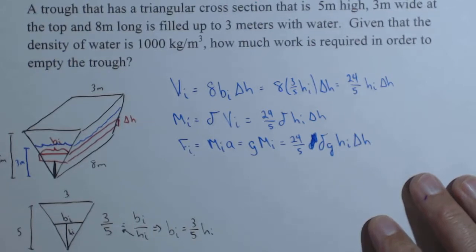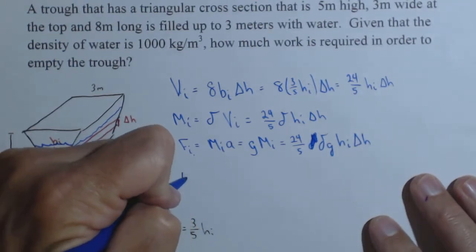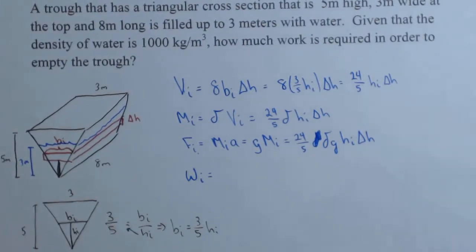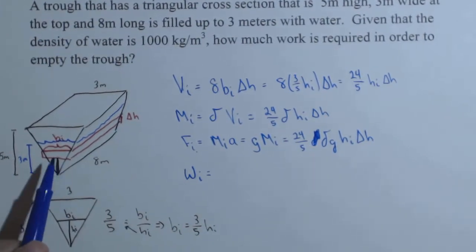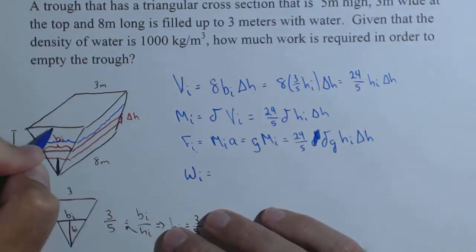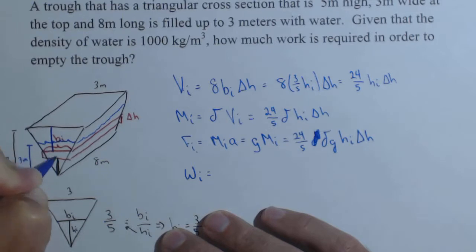We're almost there. What we need now is the work on the i-th slice. So, that i-th slice right here, we need to figure out how far it's getting moved out to the top of the trough. So if I draw in a line that represents that distance, it would go from the slice up to the top. Now, think of what we know. We know from here to here is H sub i.